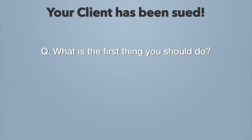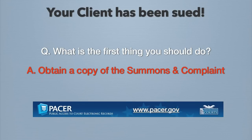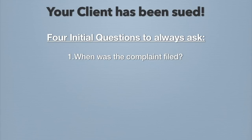What is the first thing you should do after you are contacted by the New York Times and told that it has been sued? The first thing you should do is obtain a copy of the summons and complaint. Usually you will obtain a copy from your client, but you can also get a copy from PACER — that's P-A-C-E-R — which is the federal court's online system that allows electronic, remote access to court filings. You can obtain filing information from reviewing the electronic docket on the PACER system.